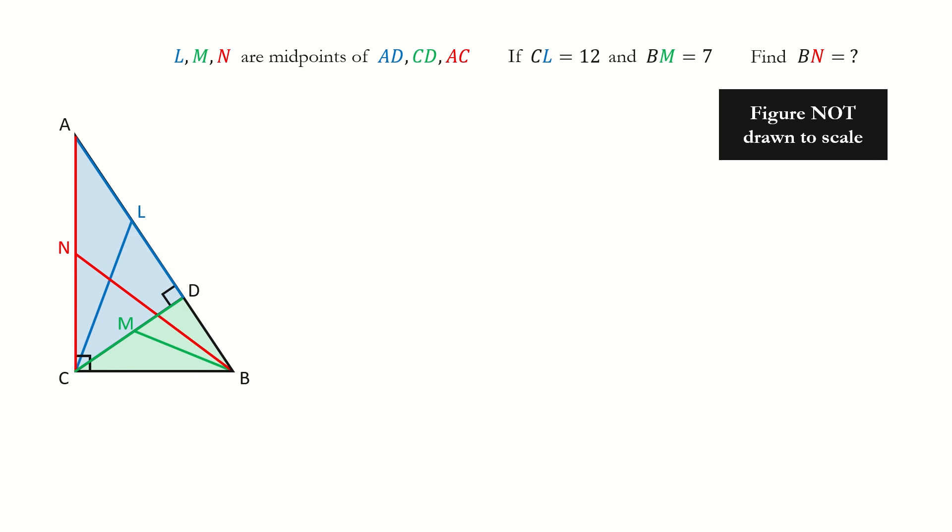First, I mark the triangle in different colors. It's easy to show the blue triangle ACD, the green triangle CBD, and the big triangle ABC. These three triangles are similar.